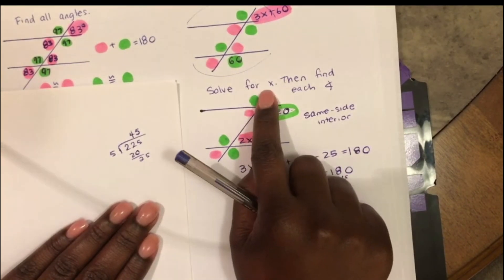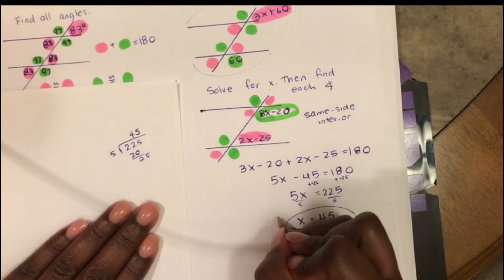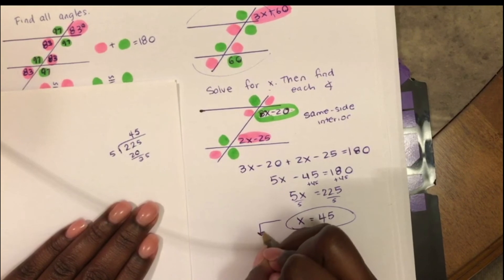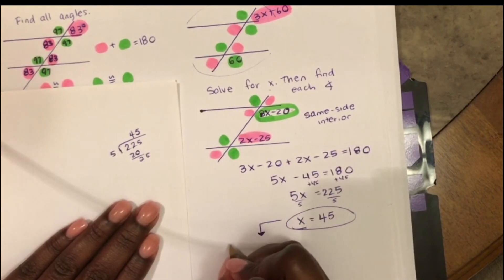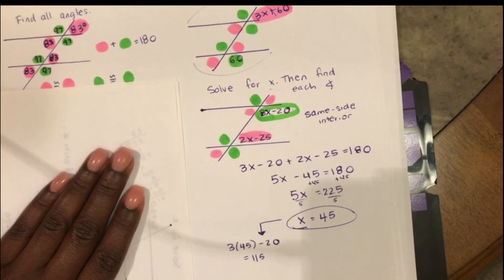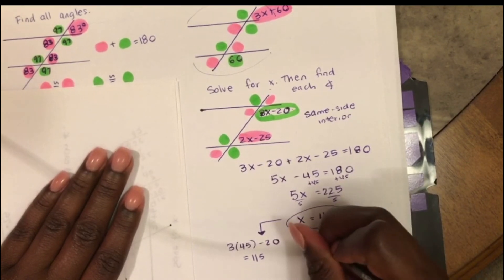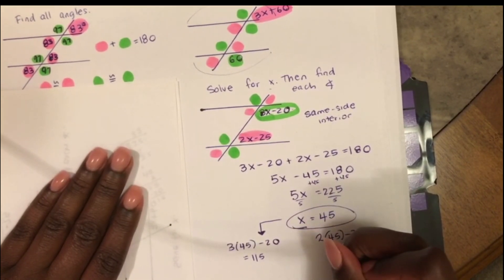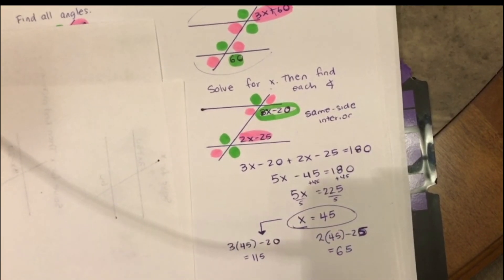This problem not only says solve for x, but also asks us to find the measure of each angle. So we plug x into each angle. The green angle comes out to 115, and plugging 45 into the pink angle gives us 65. And that's how you do these problems.